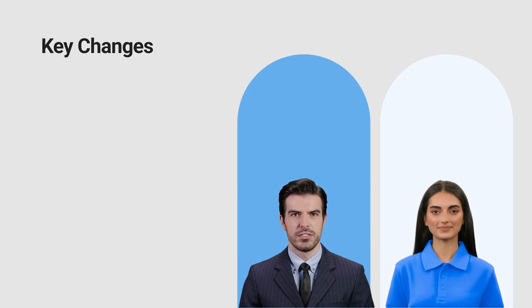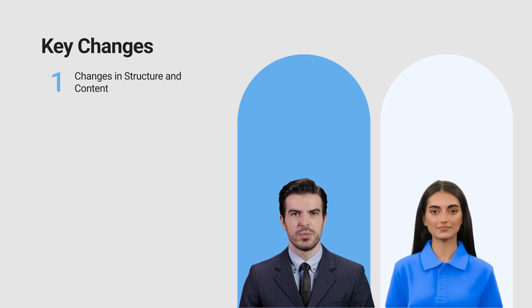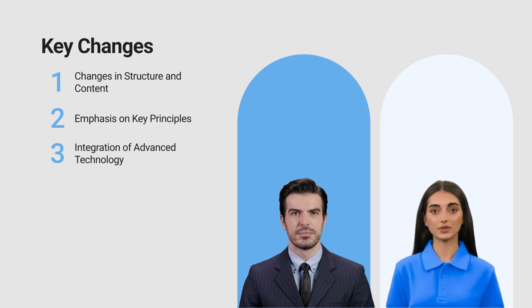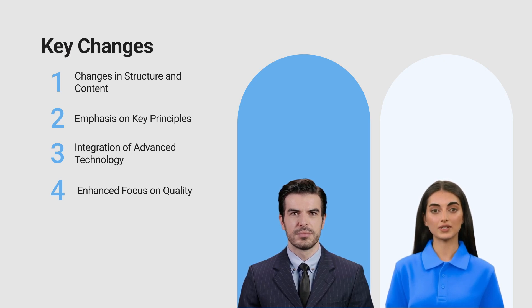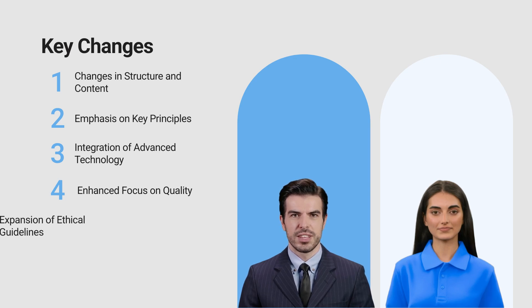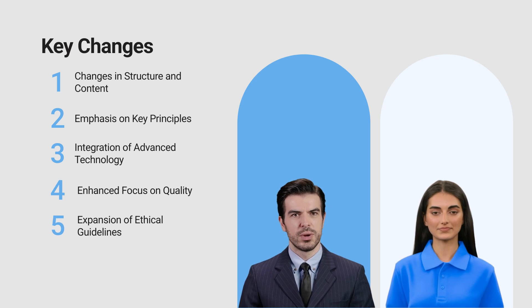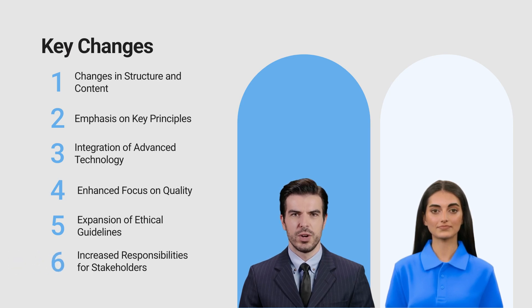Here's what we'll cover in today's session. We'll provide an overview of the key changes introduced in the E6 R3 guidelines. We'll dive into the updated structure and content, emphasizing the streamlined and more focused approach. Then we'll discuss the emphasis on key principles, which have been refined from 13 to 11. Next, we'll explore the integration of advanced technology, enhancing efficiency and data accuracy. Additionally, we'll discuss the expansion of ethical guidelines to further protect participants and ensure data integrity. Lastly, we'll look at the increased responsibilities for all stakeholders involved in clinical trials.